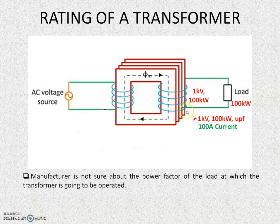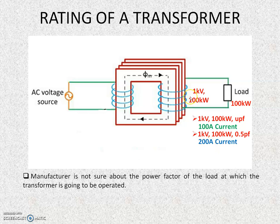Now let us consider a 0.5 power factor case — this will require a current of 200 amperes to flow in the secondary circuit. And with a 0.1 power factor, which can be lagging or leading, the current required will be 1000 amperes to deliver the same 100 kW load.